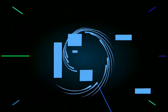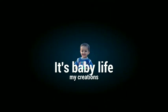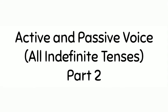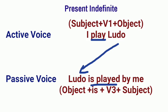Hello friends, welcome to my channel. Today I'm going to discuss active and passive voice of all indefinite tenses. First comes Present Indefinite (Present Simple). For example: 'I play ludo' — subject + verb first form + object. In passive voice, the object becomes subject: 'Ludo is played by me' — is + verb third form + by me.